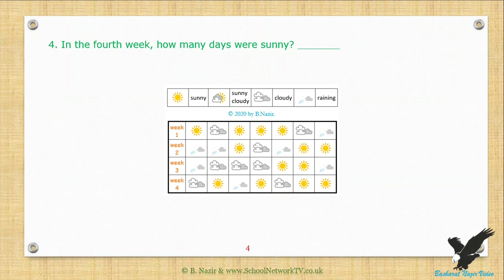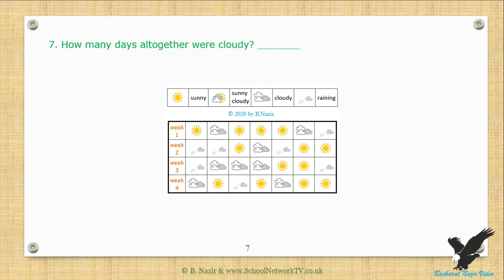How many days altogether were sunny? How many days altogether were rainy? How many days altogether were cloudy?